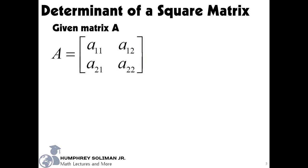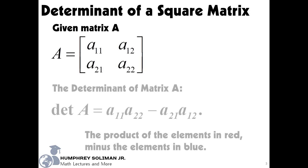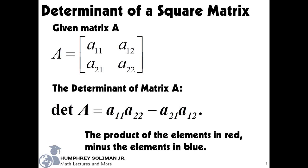To find the determinant of a square matrix, we will use the given matrix A below. The determinant of matrix A is equal to the product of the elements passed by the red arrow going down, minus the elements passed by the blue arrow going up.